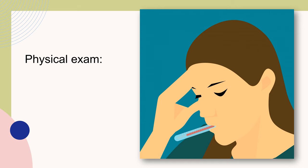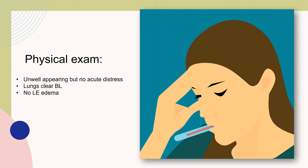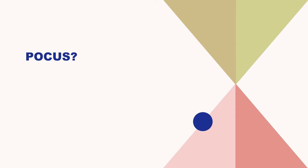Pertinent physical exam findings: she was unwell-appearing but in no acute distress, she had clear lungs bilaterally, and no lower extremity edema. A chest x-ray ordered from triage showed pneumonia. I should note that the EKG was somewhat abnormal — it had right-axis deviation, tall P waves, and right ventricular hypertrophy.